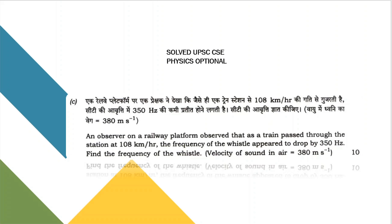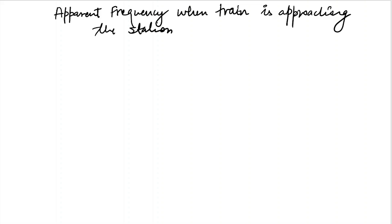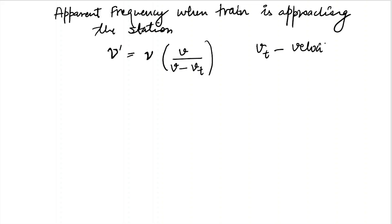Before solving, we should know two things. The apparent frequency when the train is approaching the station — let's denote this apparent frequency as mu-bar — is the actual frequency of the whistle multiplied by the ratio of velocity of sound in air divided by velocity of sound minus the velocity of the train, where vt is the velocity of the train, which is the source.